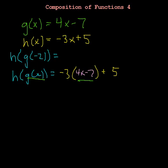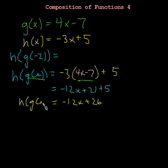So then this is equal to, we'll just multiply it through, so I get negative 12x plus 21 plus 5. And in doing that, I can then simplify. So that's negative 12x, and it'll be plus 26. And that's what my h of g of x is.